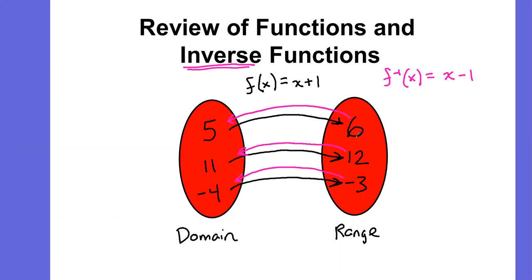Notice that works with all these values. 6 minus 1 gives me 5, 12 minus 1 gives me 11, negative 3 minus 1 gives me negative 4. Now, let's bring this up to speed and use this idea with our sine and cosine functions. Let's clear this out.